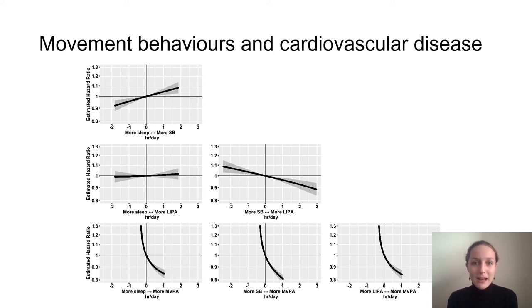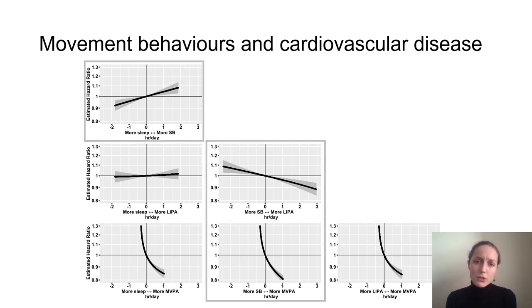To summarize what we found: reallocating time from other behaviours into moderate to vigorous physical activity was associated quite steeply with a lower risk of incident cardiovascular disease and we also found that reallocating time from sedentary behaviour to other behaviours was associated with a lower risk of cardiovascular disease.